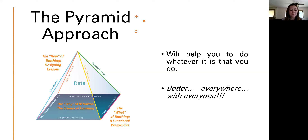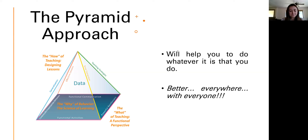Once we know why people behave the way they do and what to teach, we need to know how we're going to teach. Before we start with a lesson, we should be clear about where this lesson is going to lead us. We need to build our methods and strategies to promote generalization. Generalization will tell us where the lesson is going, what kind of lesson we are teaching, and what type of strategies we are going to use.